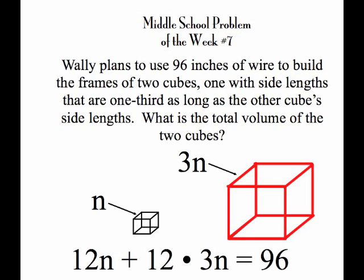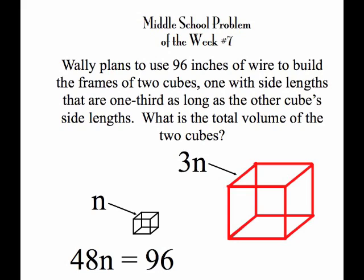Since there are 12 edges, the total in the small one is 12n and the total in the large one is 12 times 3n, which is the same as 36n. We add those up to get 48n equals 96, and we use the inverse operation to discover that n is 96 divided by 48, or 2.